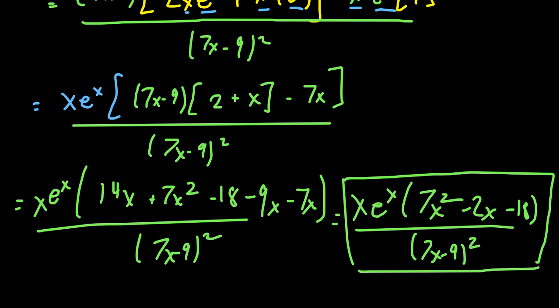Now, if I were trying to simplify this a little bit more, it would be curious to know if there's a common factor on top and bottom. The denominator has the 7x minus 9 squared. In the numerator, the 7x squared minus 2x minus 18. Is there any way of factoring that to cancel out the 7x minus 9? And with a little bit of guess and check, you'll see it's not going to happen.